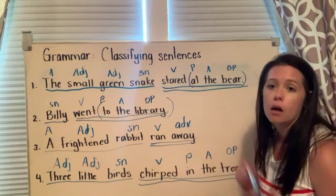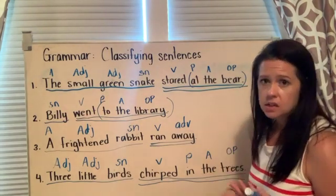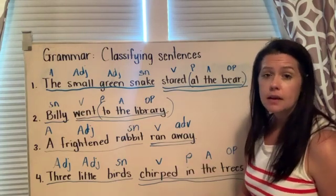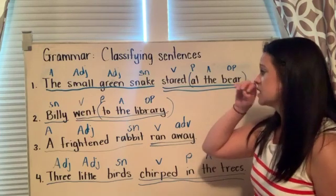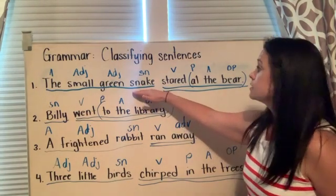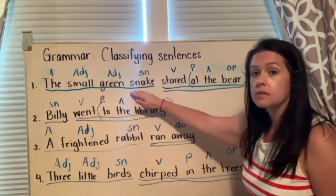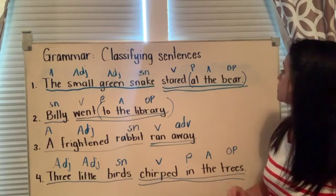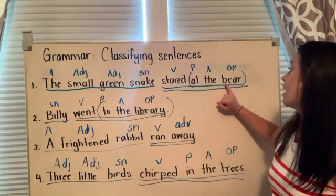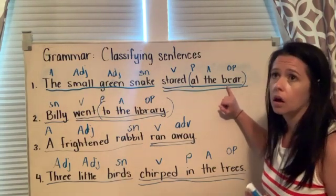Now, we've also been talking about common nouns and proper nouns. Remember, a noun is a person, a place, or a thing. Let's find our nouns in each sentence and decide: is it common or is it proper? Remember, common can be any old noun. We know it's a proper noun if it has a capital letter. Let's read sentence one again: The small green snake stared at the bear. The first noun is snake — is there a capital letter? There is not, so it's just a common noun, any old snake. The next noun is bear. It doesn't have a capital letter, so it's just a common noun — it's not the bear's name or a type of bear like a grizzly bear.